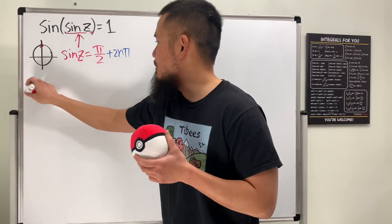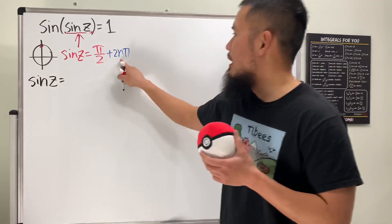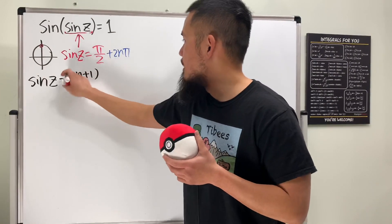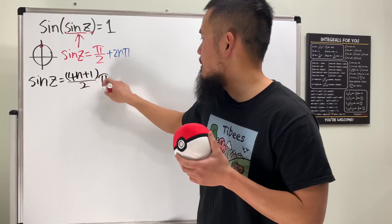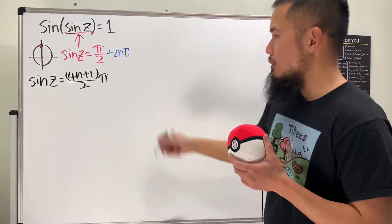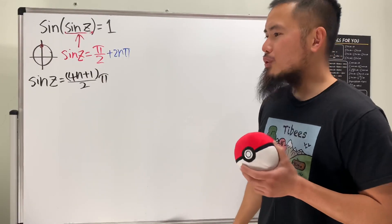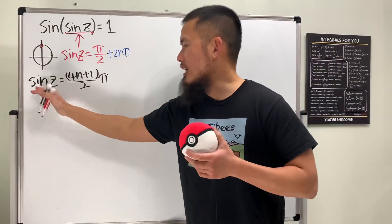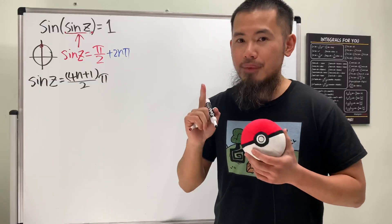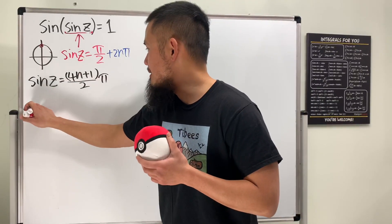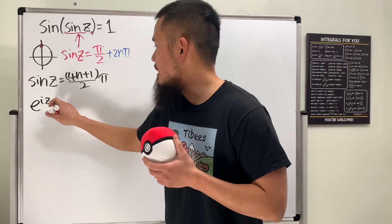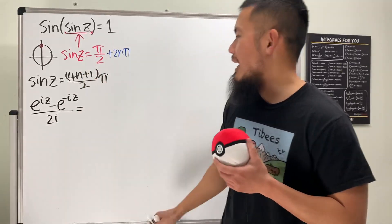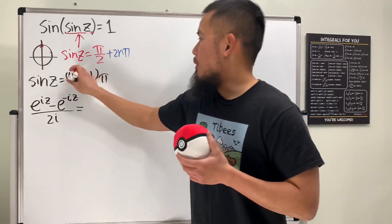We need to solve sine of z equals (4n+1)/2 · π. Recall that sine of z equals (e^(iz) − e^(−iz)) / 2i. That expression on the right is a lot to write repeatedly, so I'm going to call it a 'happy face' for short. So we have: e^(iz) − e^(−iz) equals happy face times 2i.